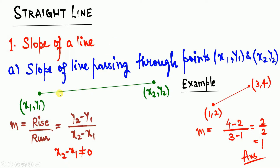Slope means gradient, which means rate of change — it tells you how this line is changing, what is the rate of change of this particular line. So m = (y2 - y1) / (x2 - x1), provided x2 - x1 is not equal to 0. If the denominator becomes 0, the slope becomes undefined, and it represents a vertical line.